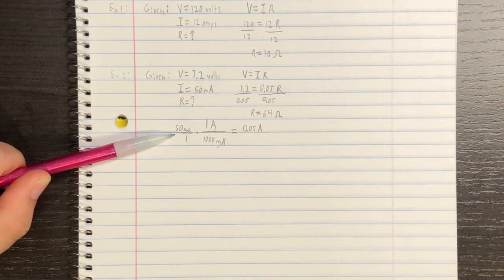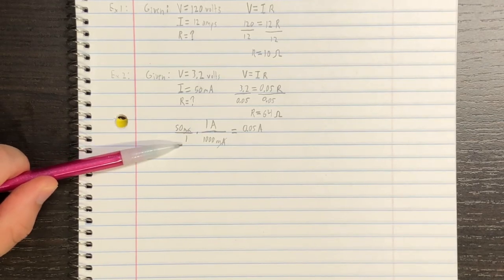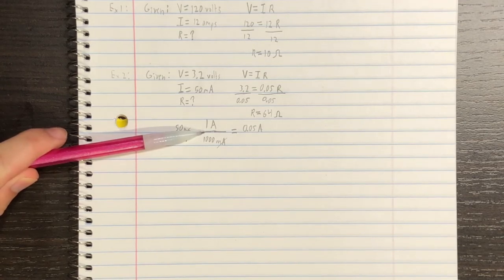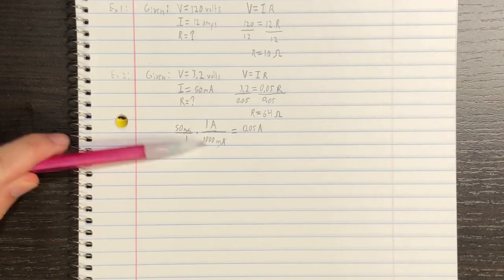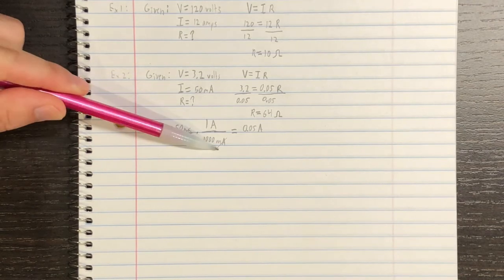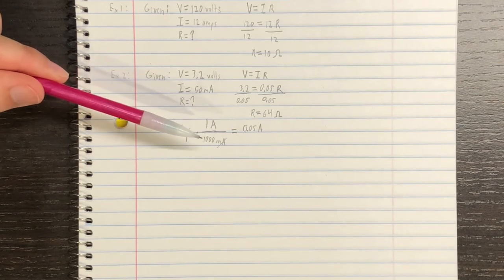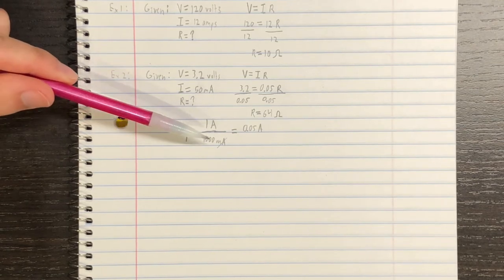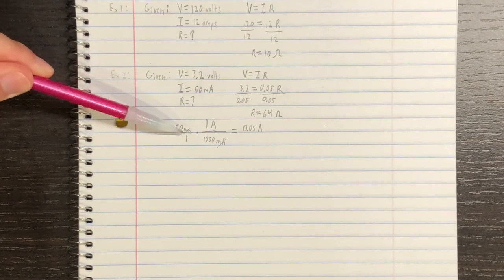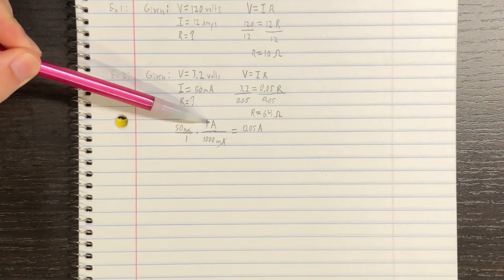So, using a conversion factor, we just write 50 milliamp over 1 on this side. And on this side, we know that 1 amp is equal to 1,000 milliamps. So, in order to get these units to cancel, we write 1,000 milliamps in the denominator of a fraction. And in the numerator, we write 1 amp. And after we cancel these units, we are just left with amperage here.